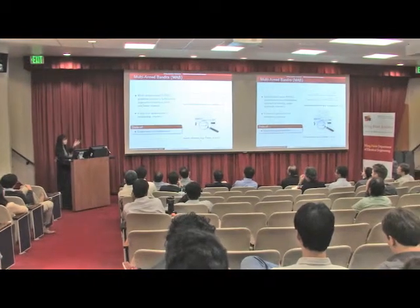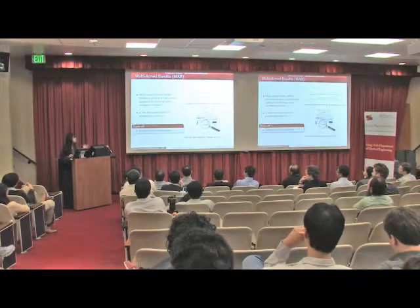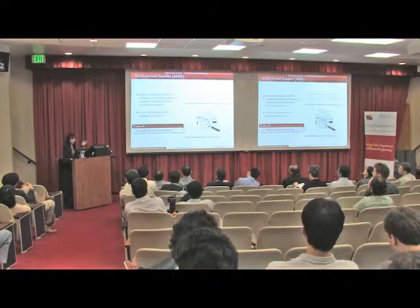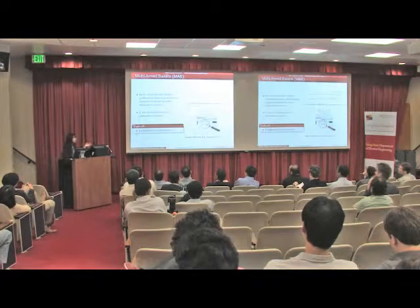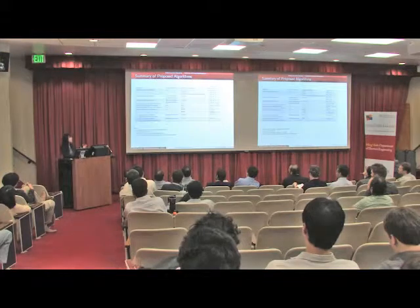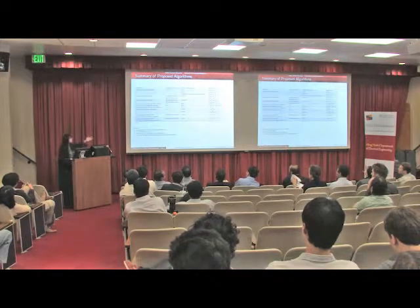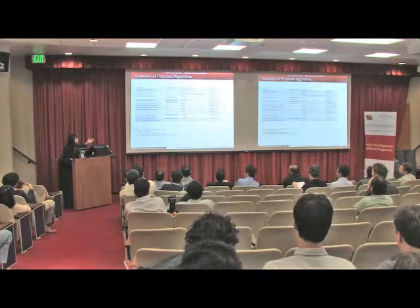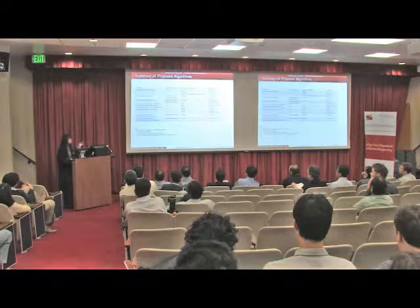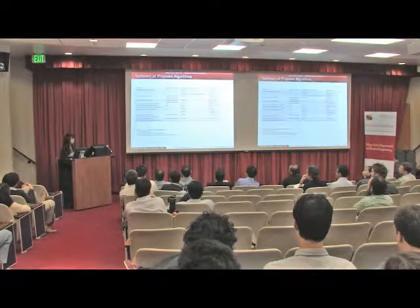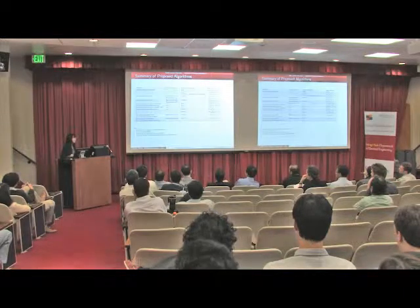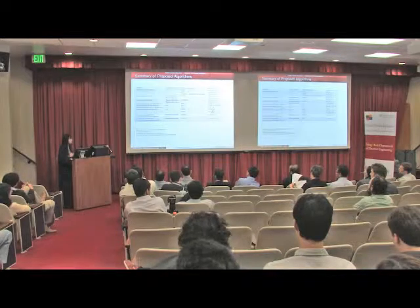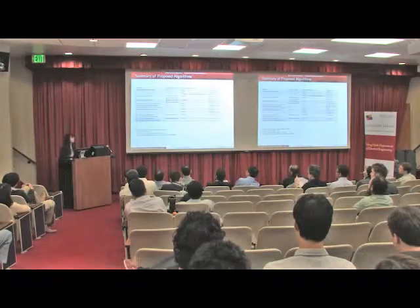The mathematical tool I adopt is called the multi-armed bandit problem, which is a stochastic decision problem. The fundamental trade-off here is exploration versus exploitation. The algorithms I propose for different problem settings and formulations achieve an upper bound on regret that grows logarithmically in time, with storage that is also polynomial in the number of unknown random variables. The storage and computation time for most scenarios are also polynomial.